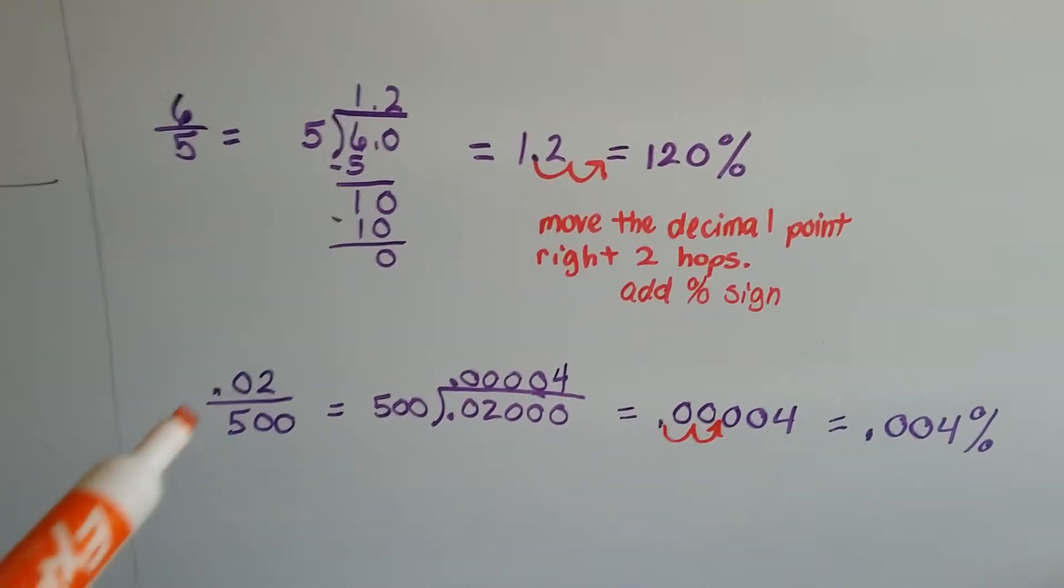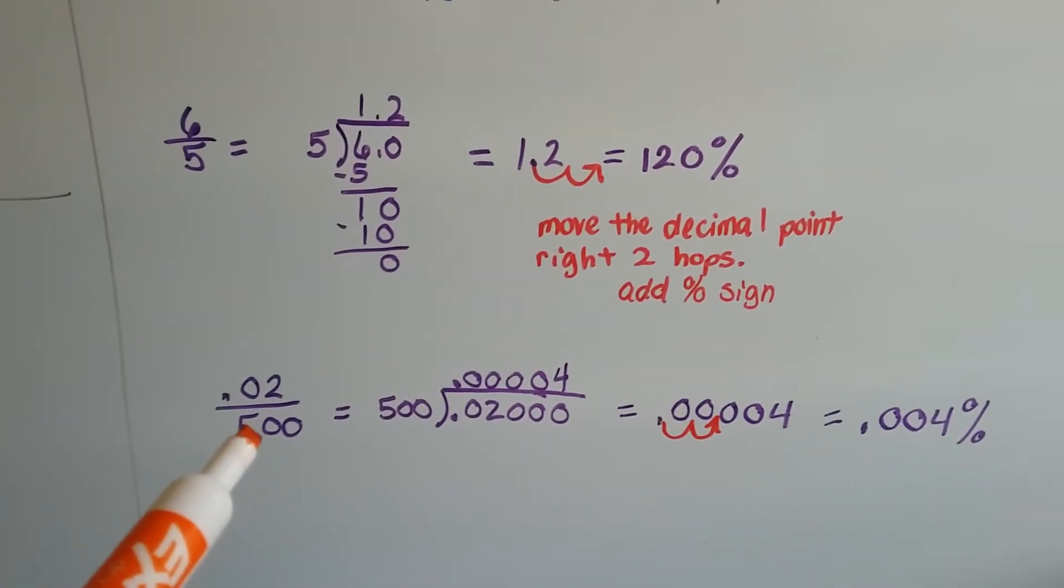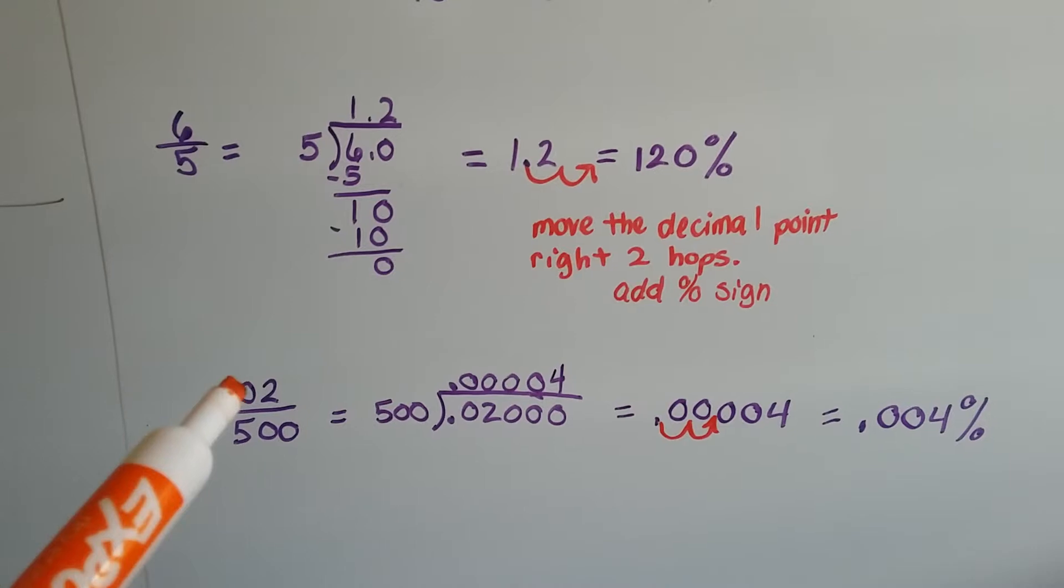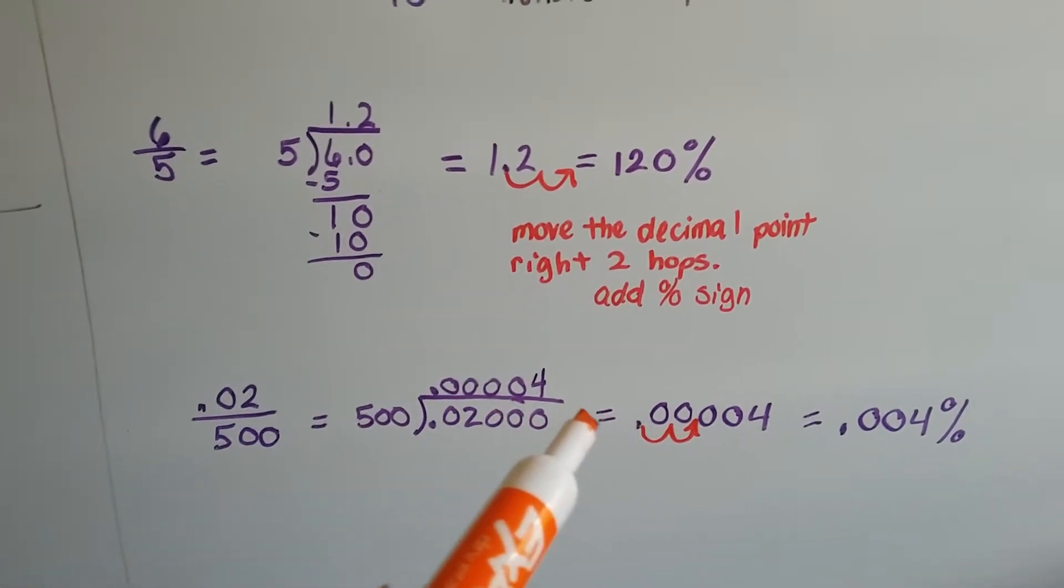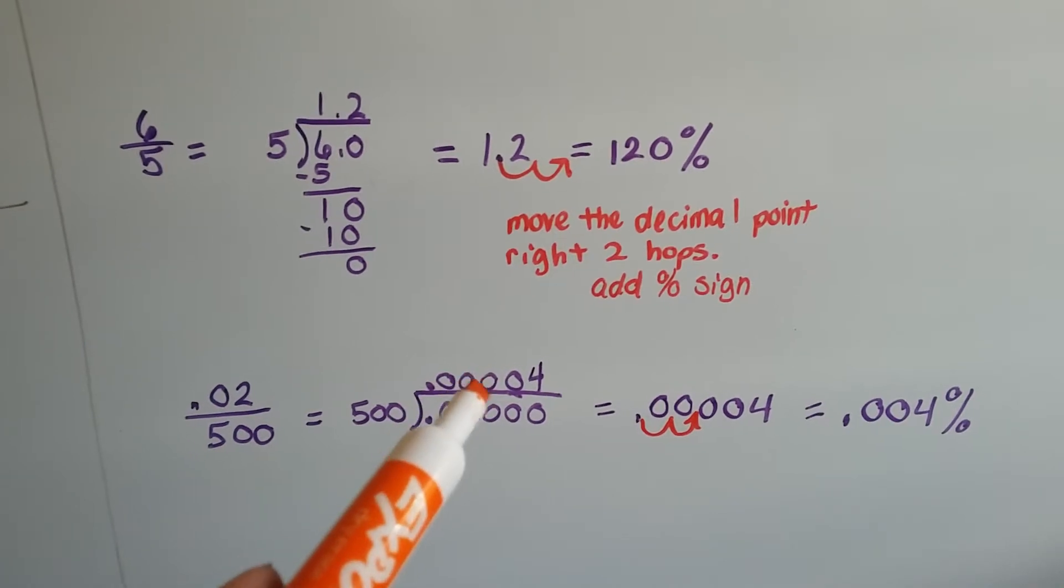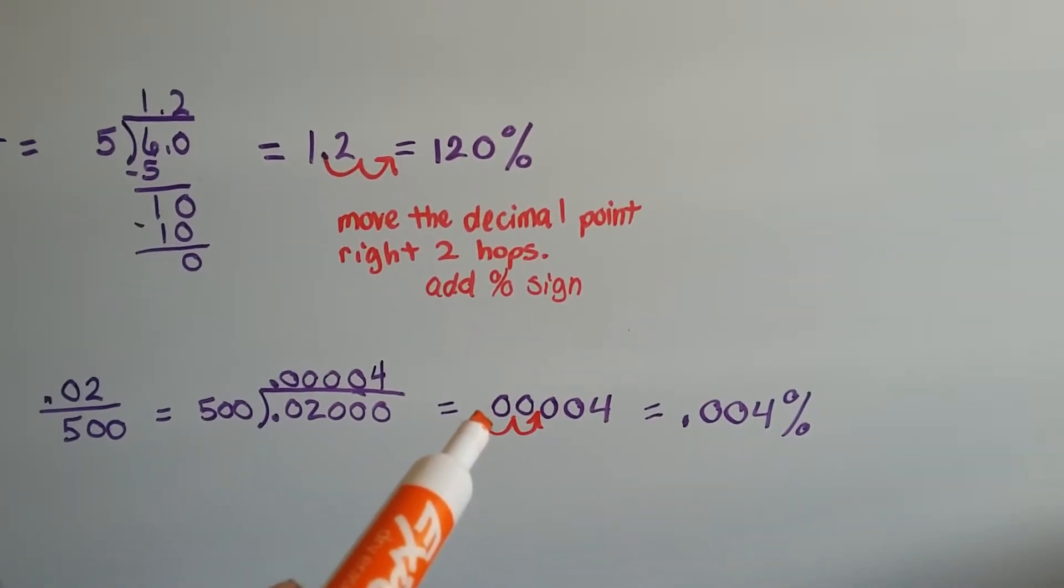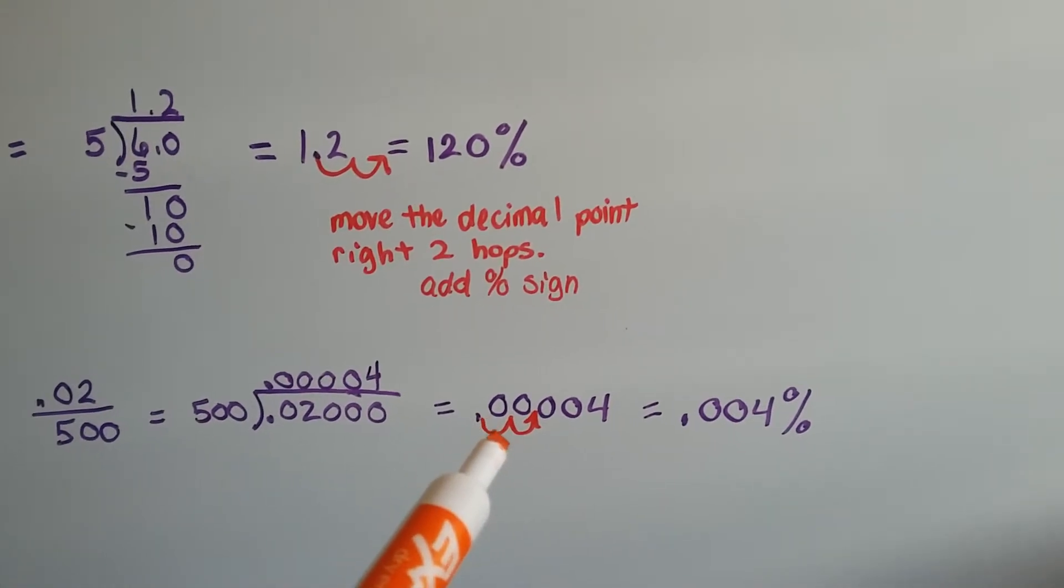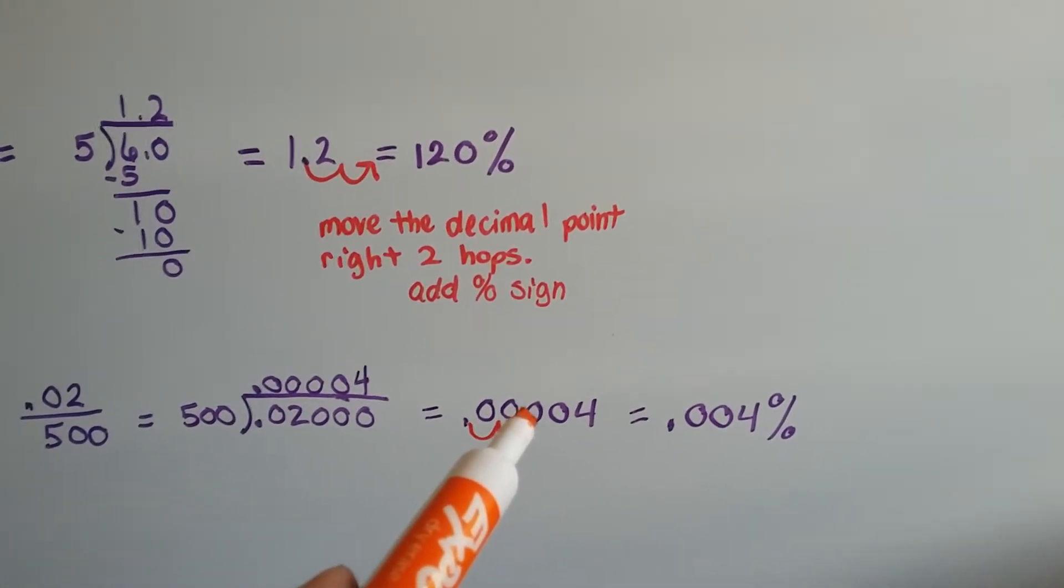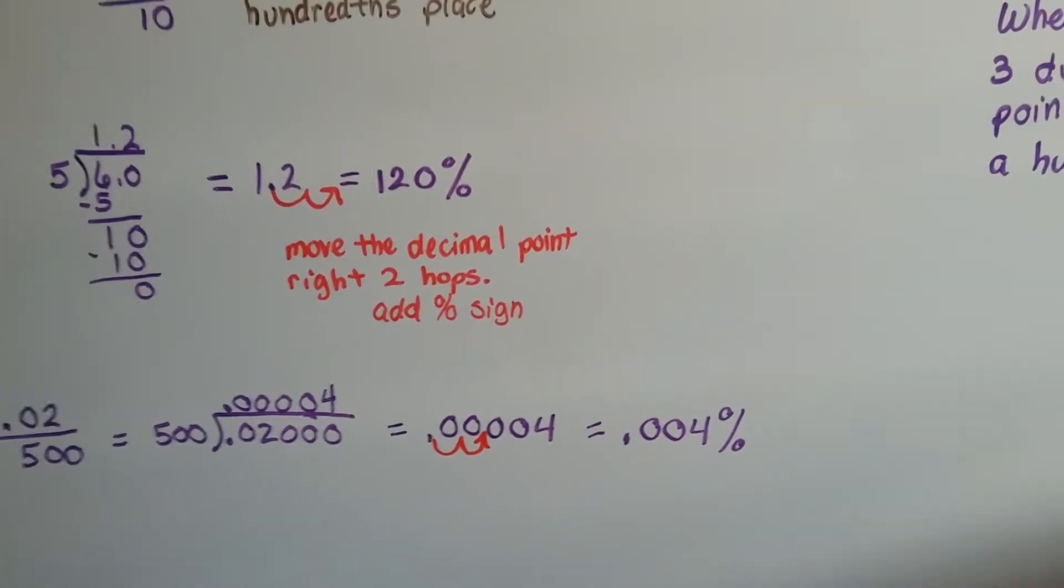If we have 0.02 over 500 as a fraction, how many times can 500 go into 0.02? We have to add a lot of extra zeros behind the two to help us do it, and it comes out as 0.00004. To turn it into the percentage, we move the decimal point back two places, one, two. And now it's here, and we have 0.004%.